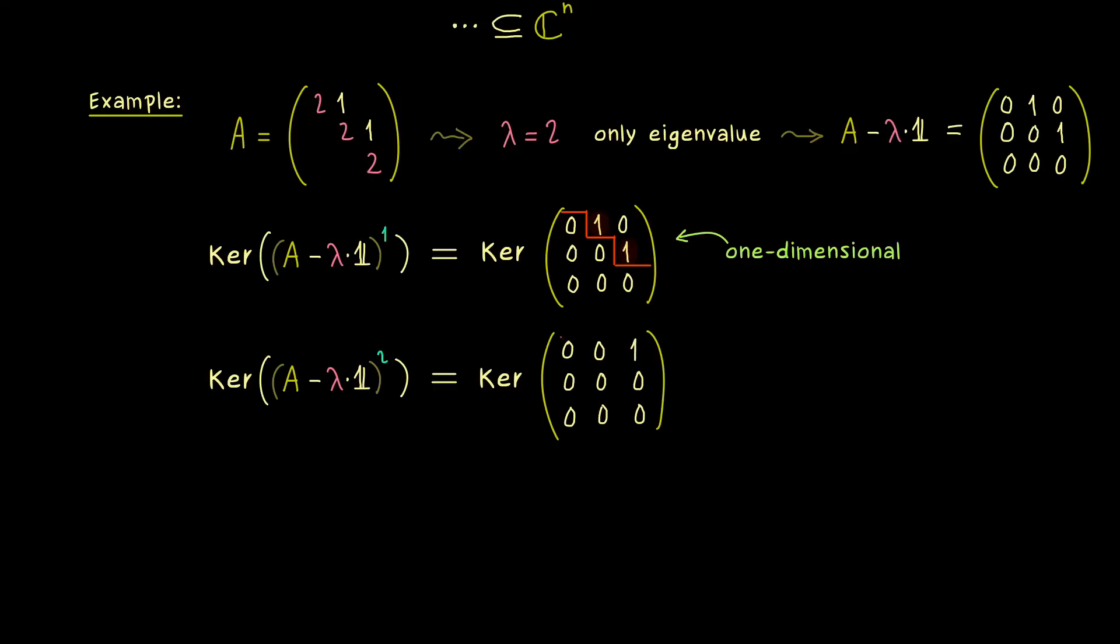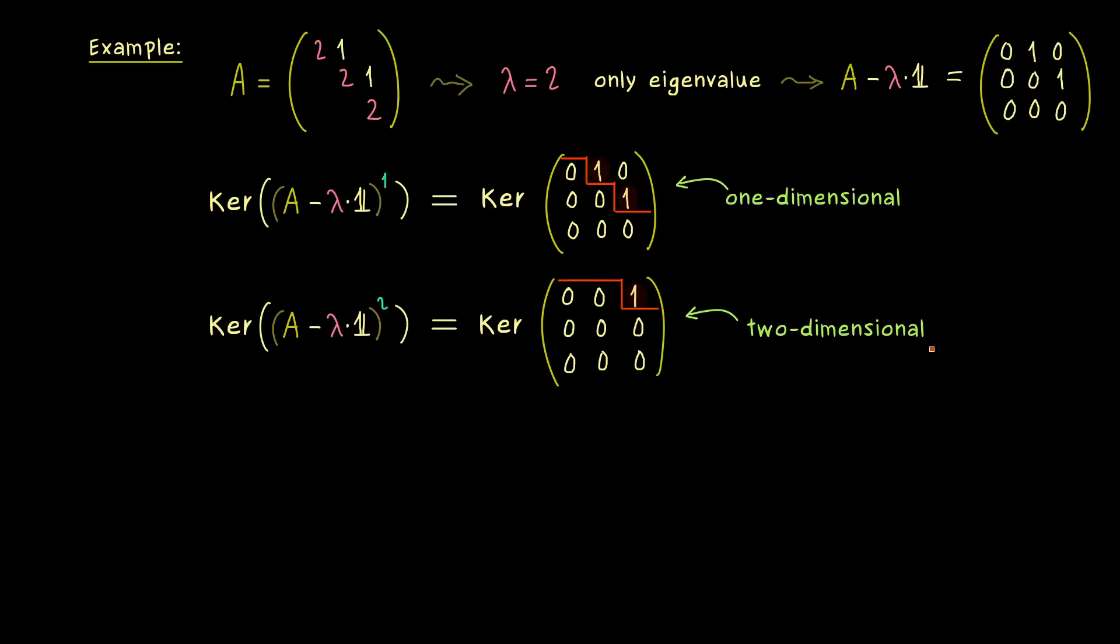So again we don't have to do any row operations because the row echelon form is already there. And there we see we only have one pivot so two free variables. And this immediately implies that our generalized eigenspace here is two dimensional. So we actually have a jump in the dimension and we can go to the next one.